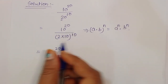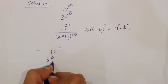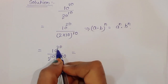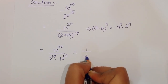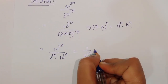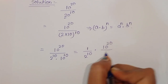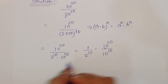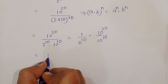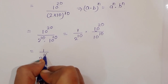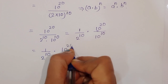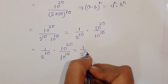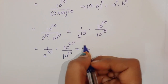Applying that formula, we get 10 raised to 20 divided by (2 raised to 10 times 10 raised to 10). We can separate this as (1 divided by 2 raised to 10) times (10 raised to 20 divided by 10 raised to 10). Since the base is the same on both sides, we apply the quotient rule: 10 raised to 20 divided by 10 raised to 10 gives 10 raised to 10.